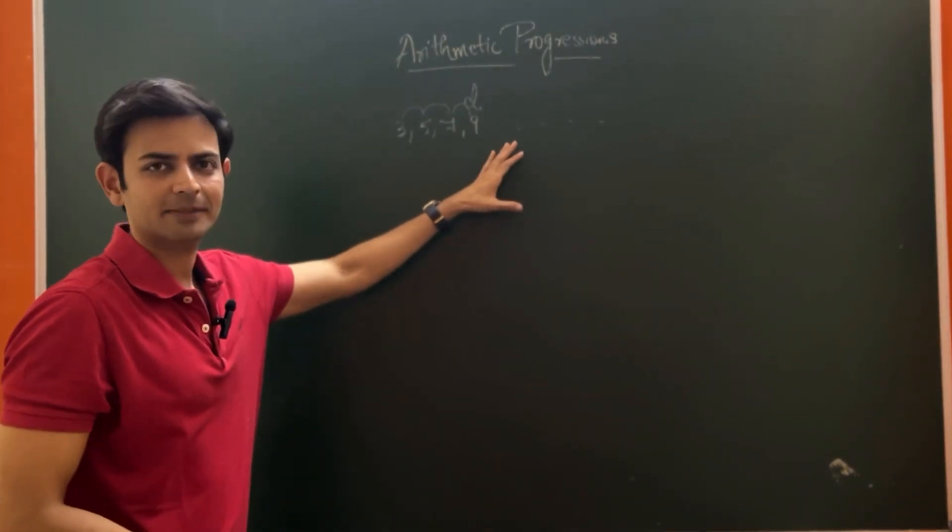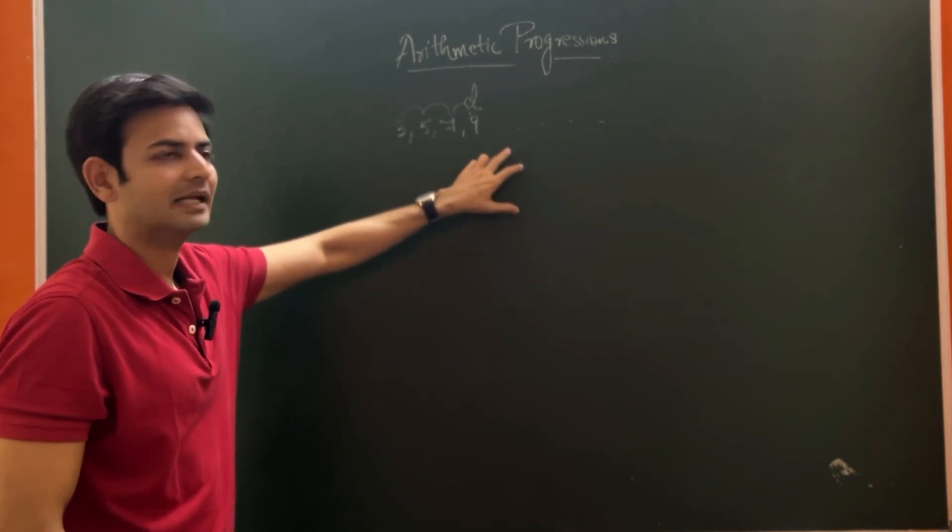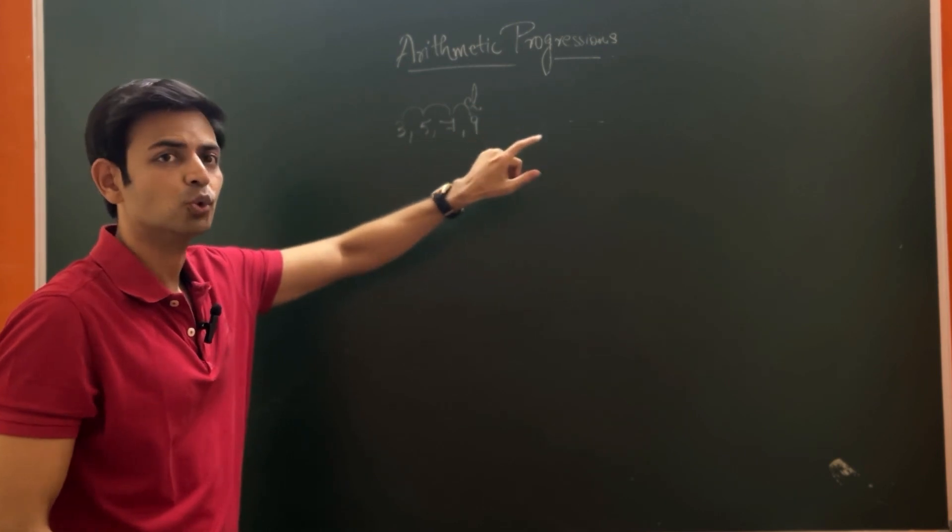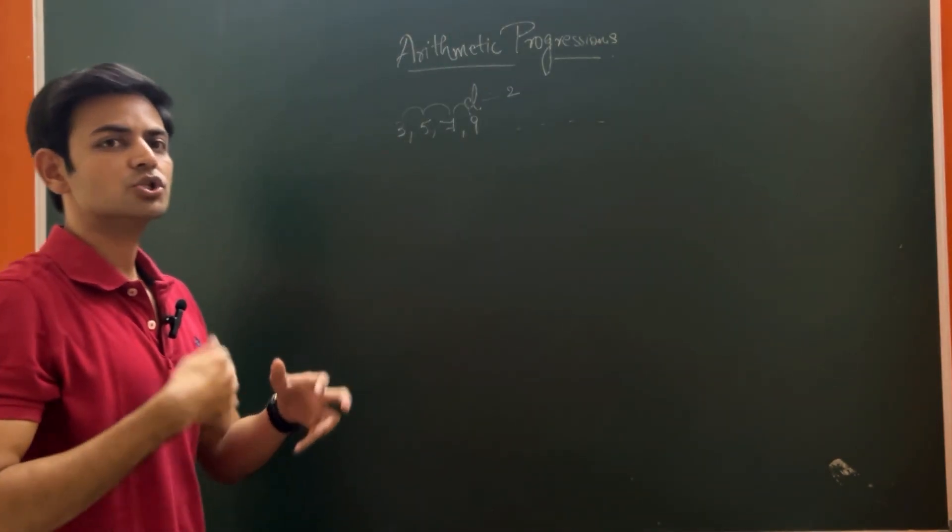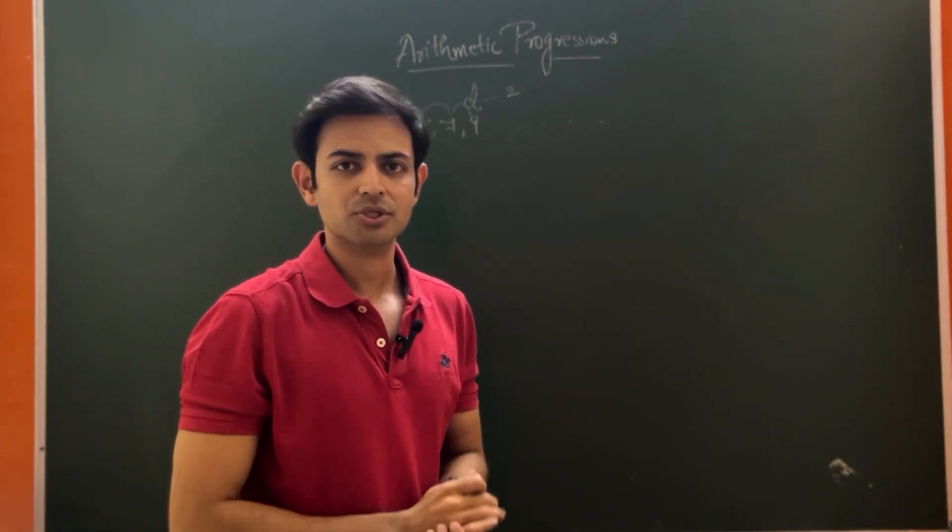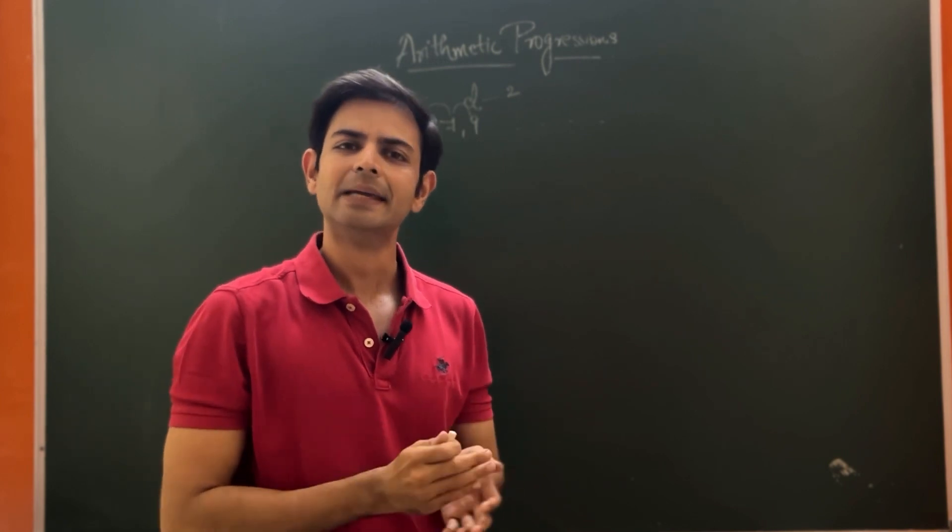They are in arithmetic progression or AP and they follow a particular pattern and they differ by number 2. Here common difference is 2. Generally in the question paper, you will be having questions like identify if the given numbers are in AP.